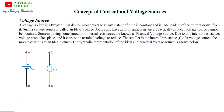Let's talk about voltage source. Voltage source is a two-terminal device — one positive and one negative — whose voltage at any instant of time is constant and is independent of the current drawn from it. It has nothing to do with the current drawn from it; the value of the voltage remains constant all the time. Such a voltage source is called an ideal voltage source — something which is not changing with time. And that would have zero internal resistance; only then is it possible that its value would remain constant all the time.